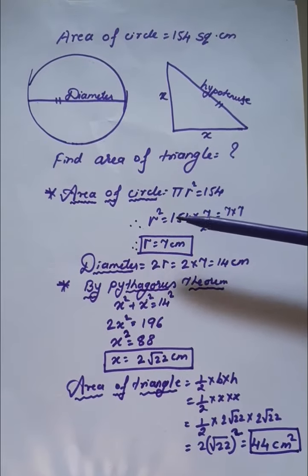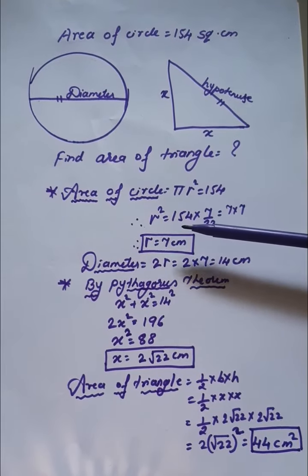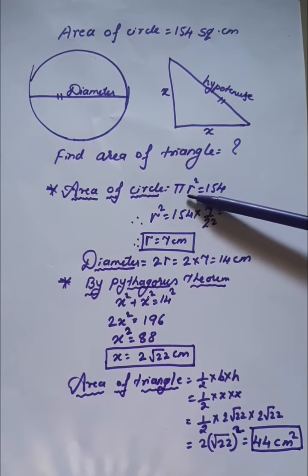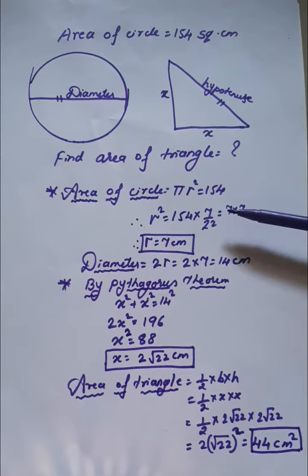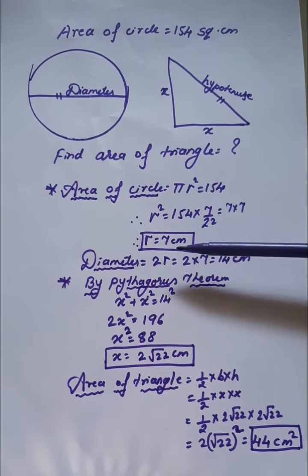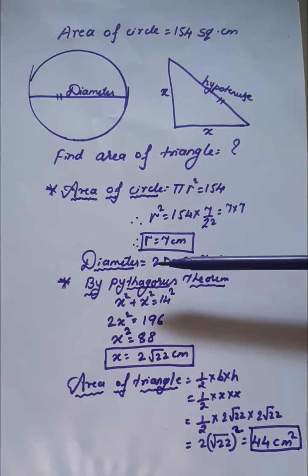When we substitute the values, r² equals 154 times 7 divided by 22, taking the reciprocal of π. The answer is 7 times 7, so r equals 7 centimeters.